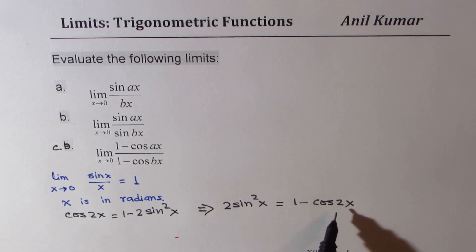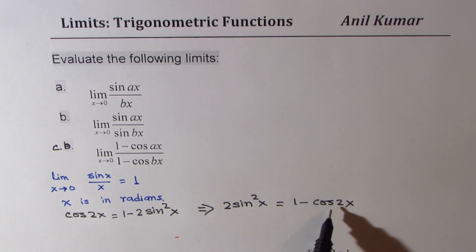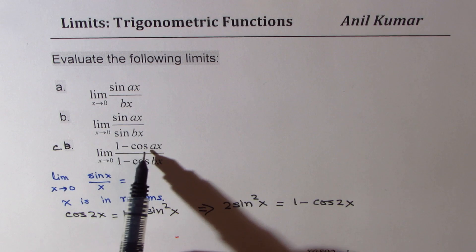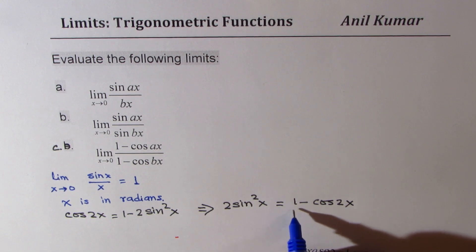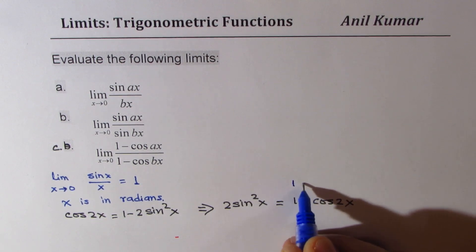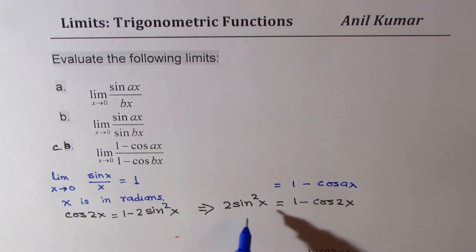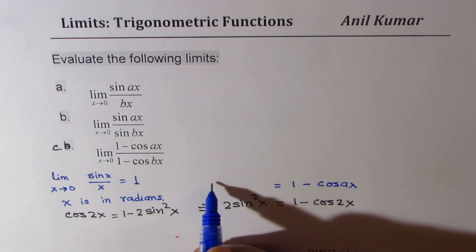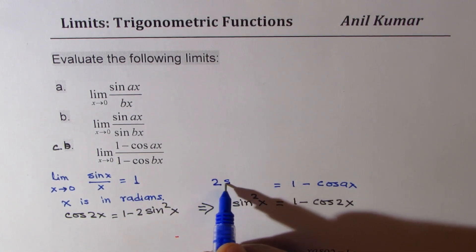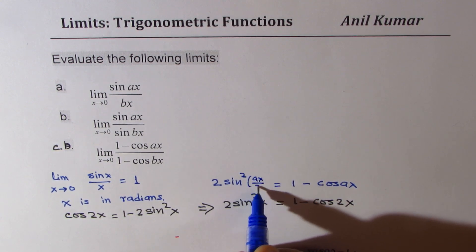x is half of this, so this is 2x here on the right side for cosine. So 1 minus cos ax — that means 1 minus cos ax is going to be equal to 2 sine square ax by 2.